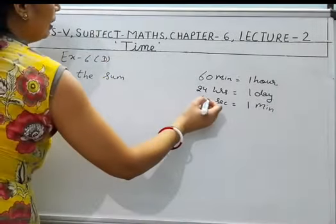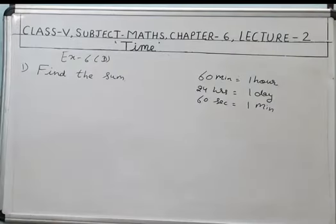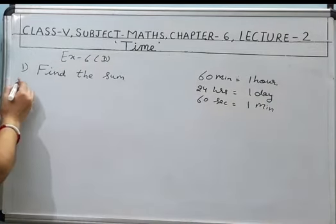If we are getting 60 minutes, it means 1 hour. If we are getting 24 hours, 1 day. 60 seconds, 1 minute. If in any question we are getting 4 weeks, it will be written as 1 month, approximately. This we will use in our questions.